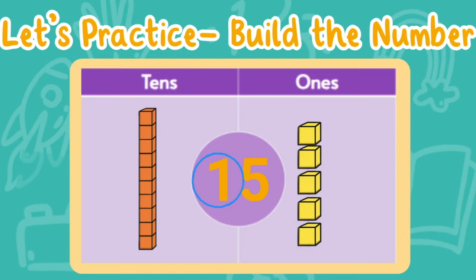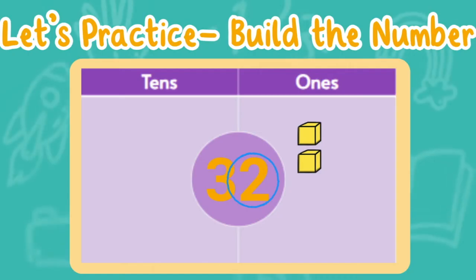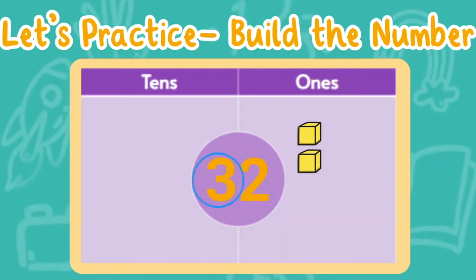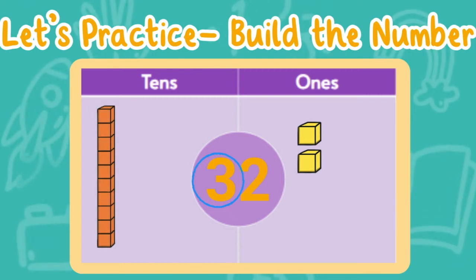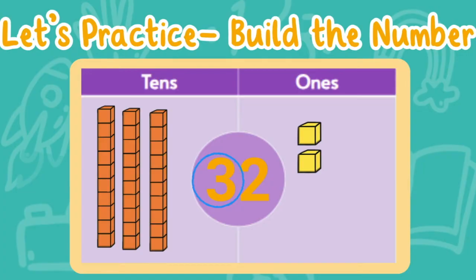Let's add one ten stick. My one ten stick shows me one ten. There is one ten stick and five ones in the number 15. Now let's look at the number 32. I see a number two in the ones place, so I need to add two ones cubes: one, two. Now let's look at the tens place — I see a three in the tens place, so I need to add three ten sticks: one, two, three. I have three tens and two ones in 32.